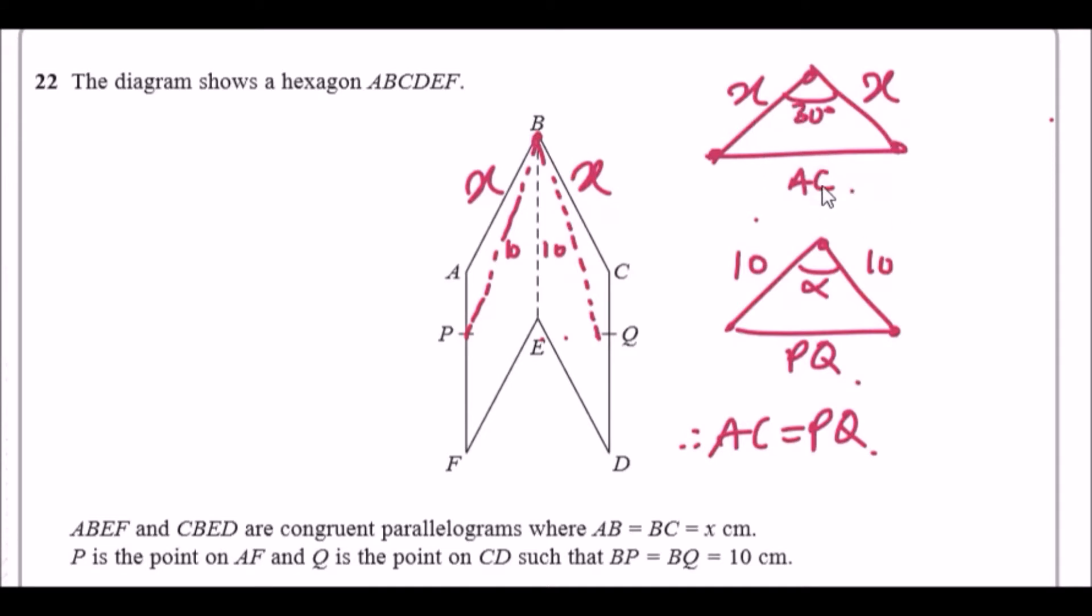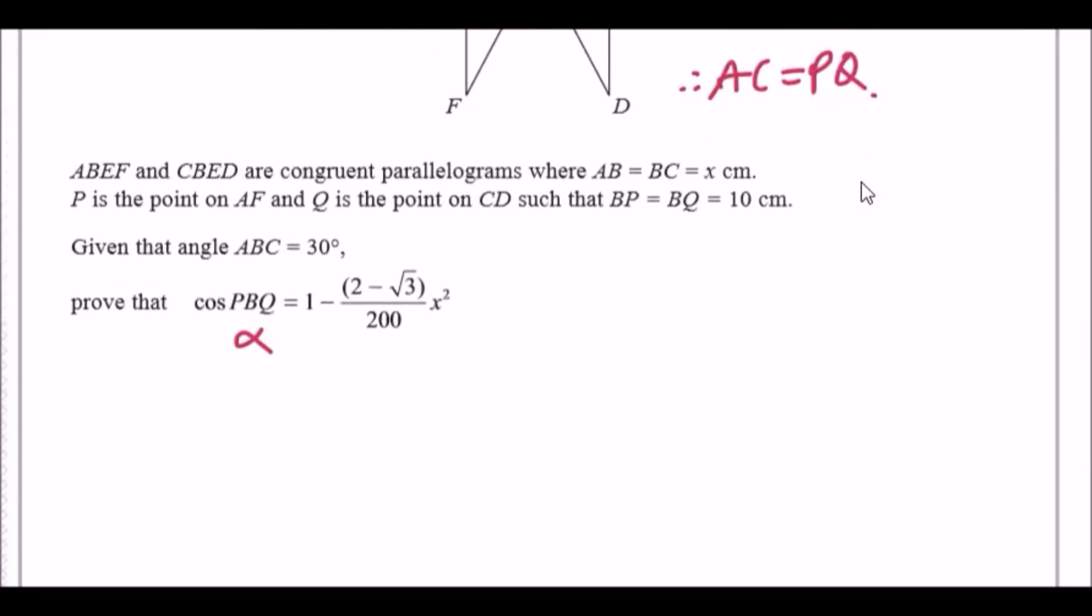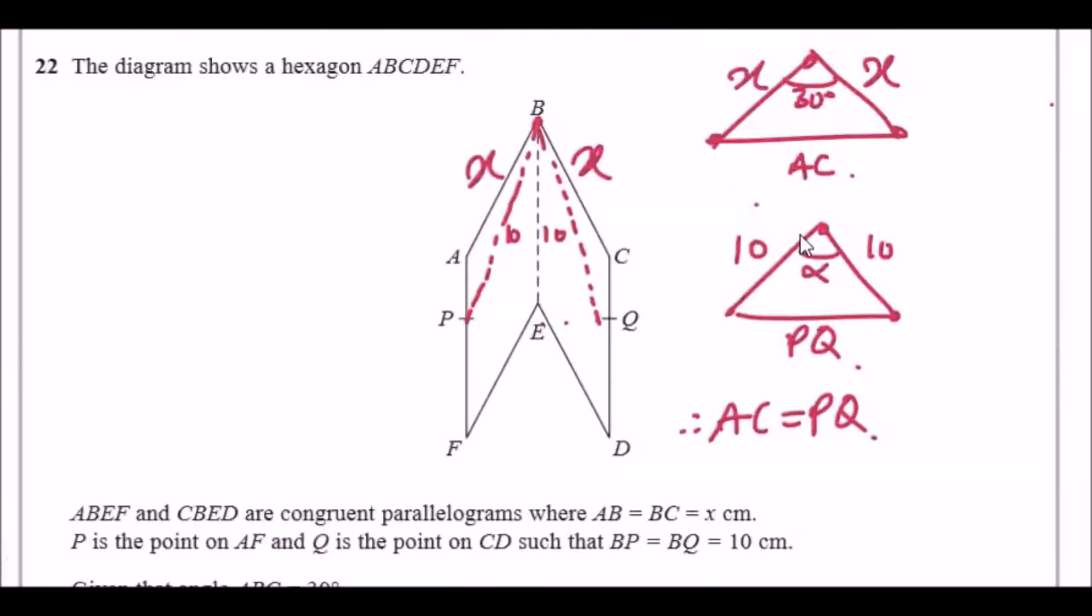So I could say, you know, you can let AC be your little a and angle be the capital A. I could say now, you know, using the general formula where a² equals b² plus c² minus 2bc cos A, that little a is AC².